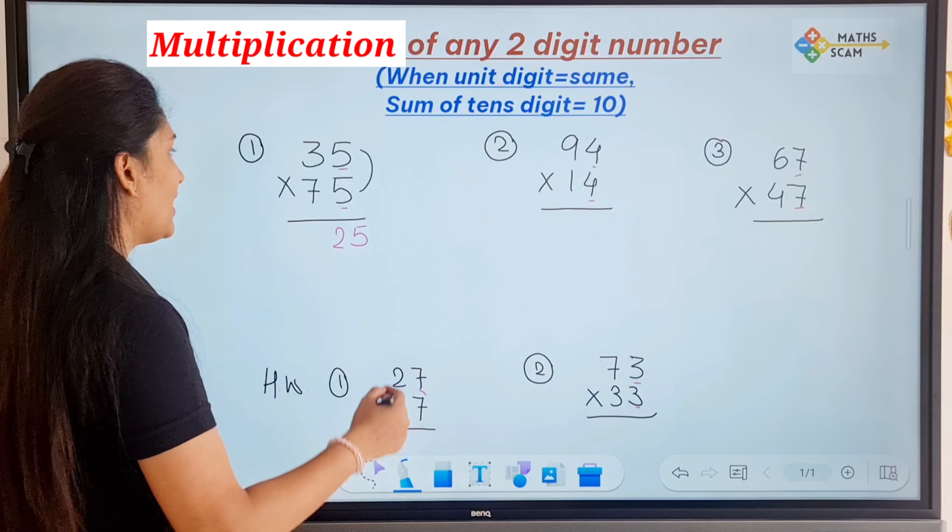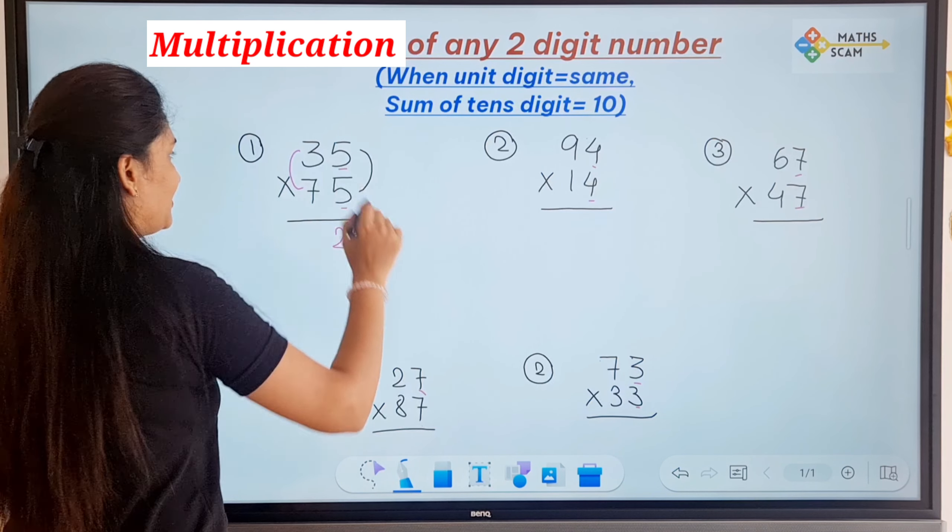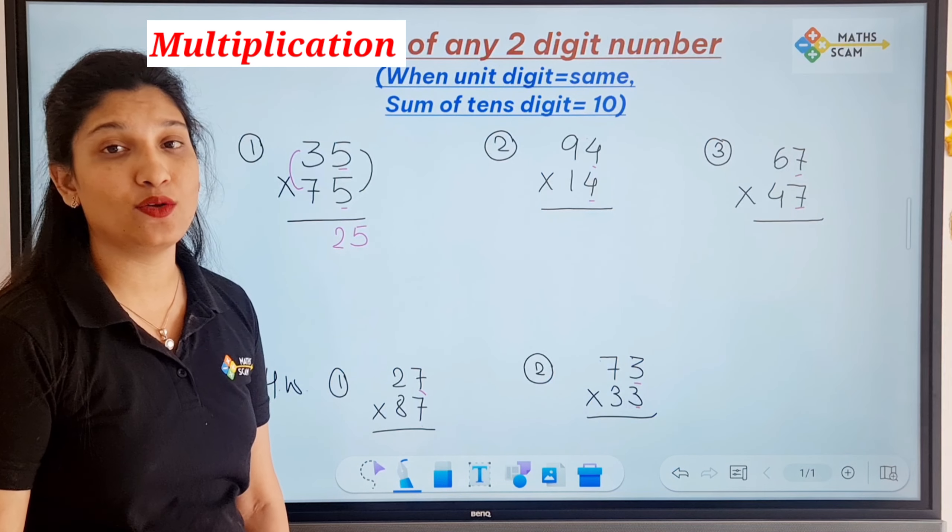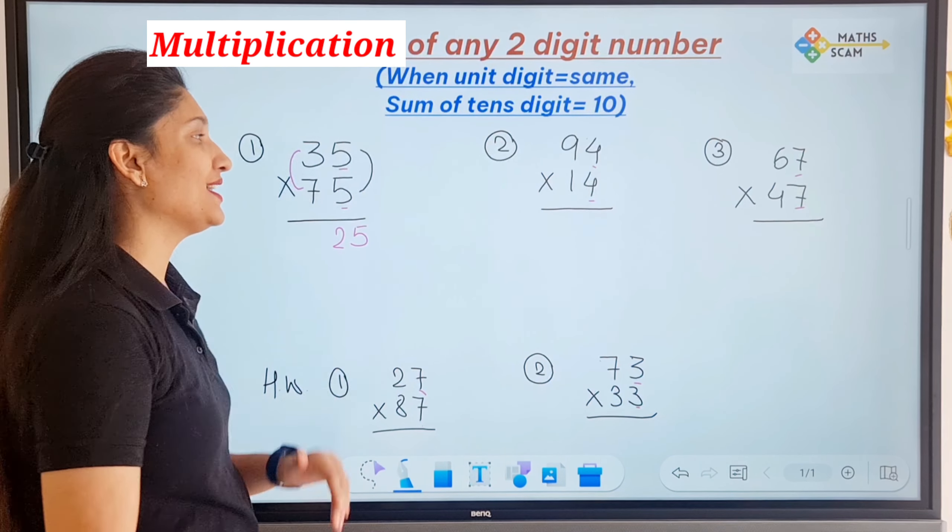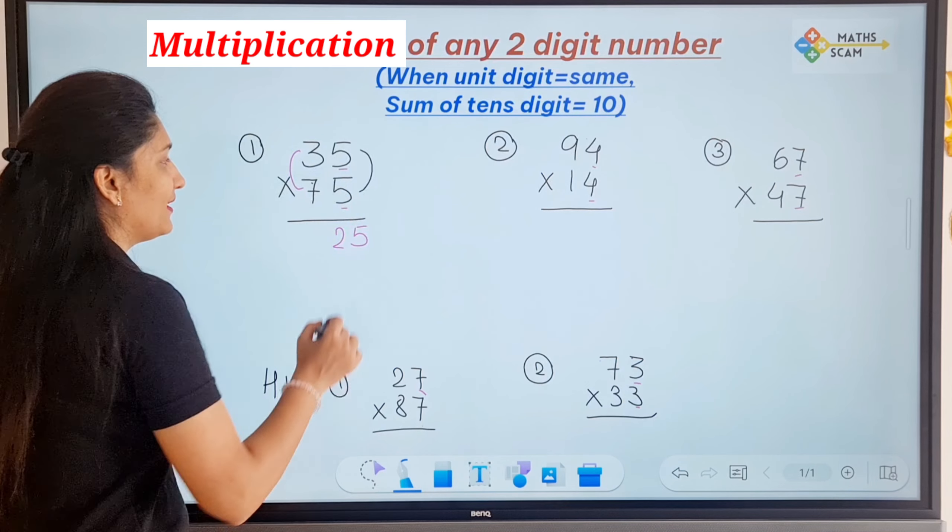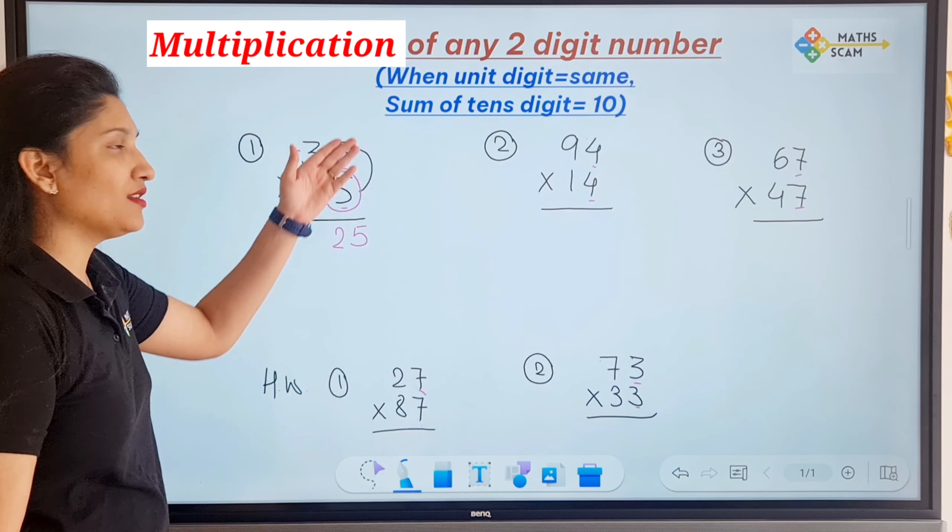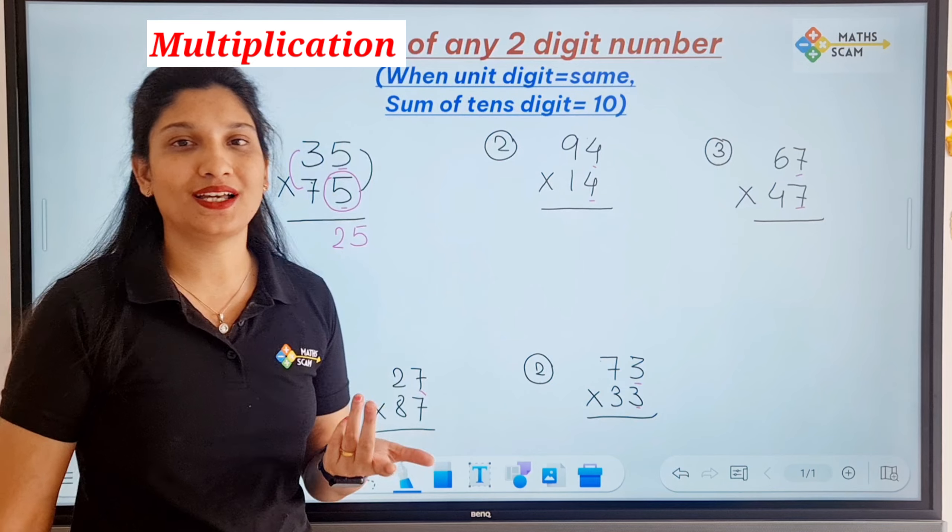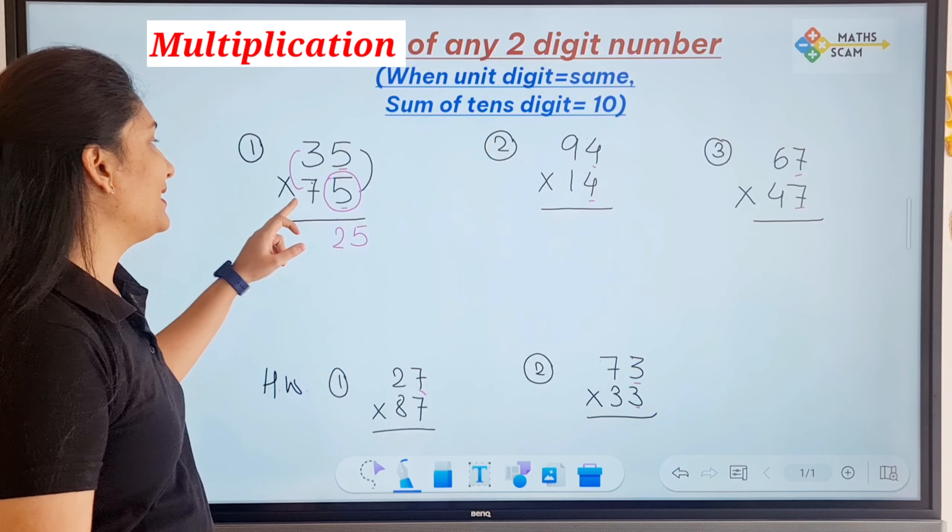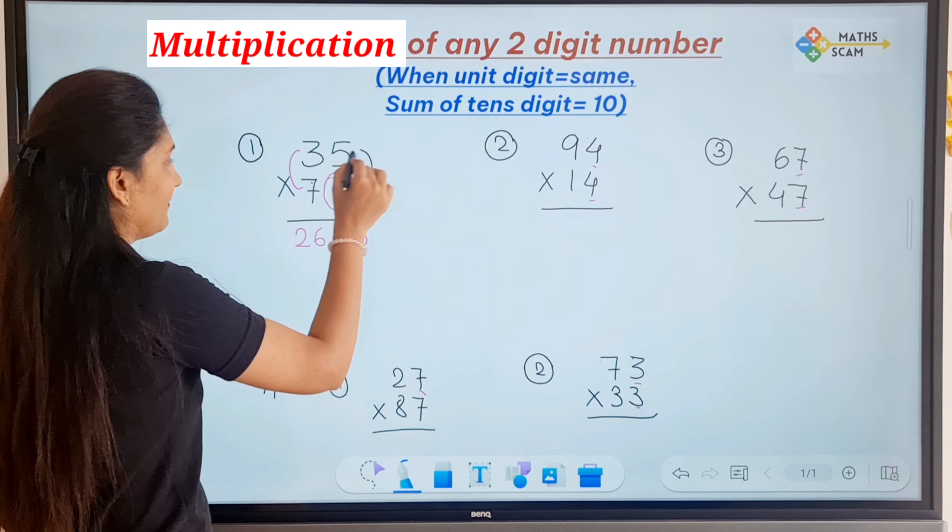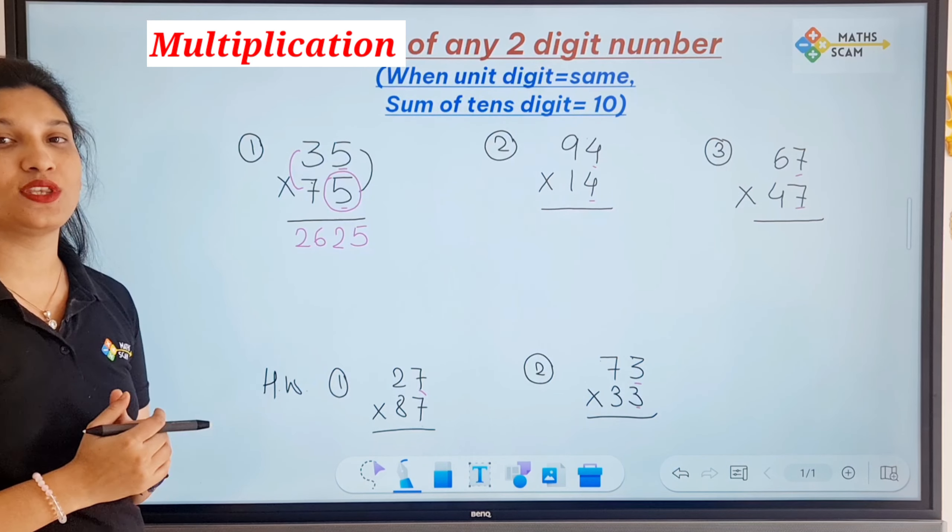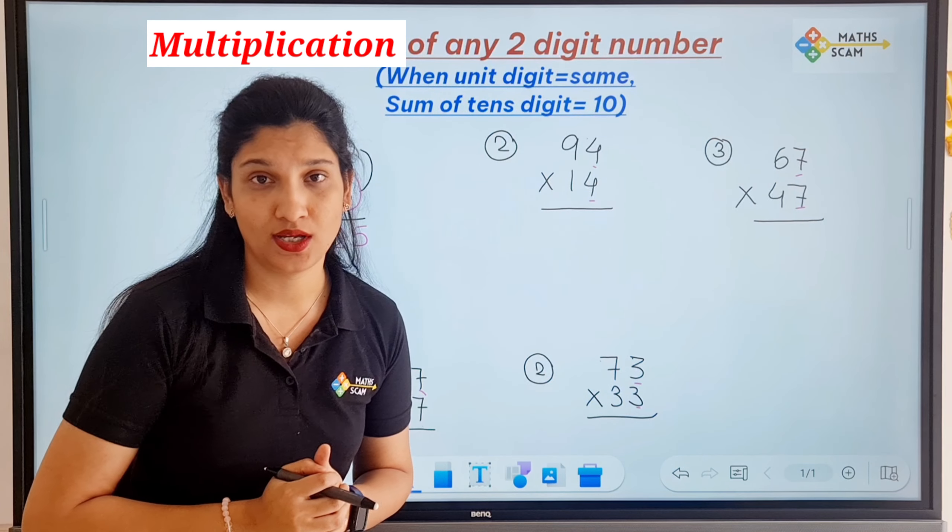Simple first step. The next step is you have to multiply the tens digits: 7 times 3 is 21, but that is not the answer. What is the answer? 7 times 3 is 21, and then add the unit digit in it. So which unit digit to add? Because both are same. So 21 plus 5 is 26. So 35 times 75, the answer is 2625.